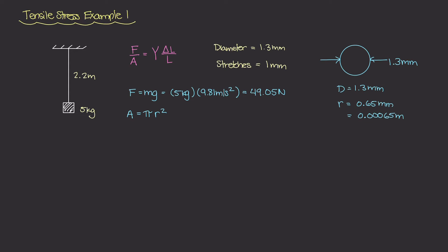Well we can now take this radius and plug it into our area equation and that becomes π times 0.00065 meters squared. And this turns out to be about 1.327 times 10 to the minus 6 meters squared.